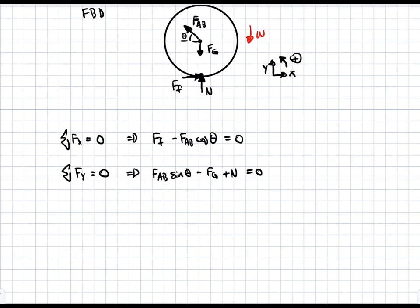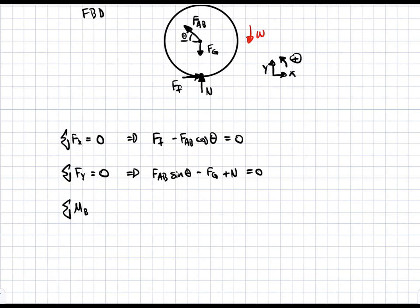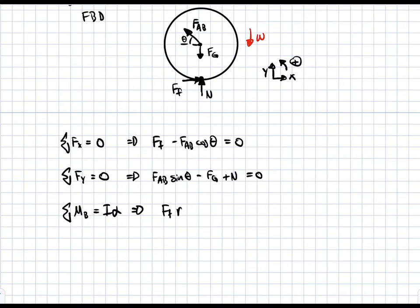For the sum of moments, we can take it about any point, but we'll take point B because it's the point that has most of the forces going through it. That lets us cancel out FAB, Fg, and N since they have no moment arm, simplifying our equation significantly and avoiding a complicated cross product. The moment equation equals I times alpha, since we do have an angular acceleration. This gives us: friction force times the radius equals IB times alpha.